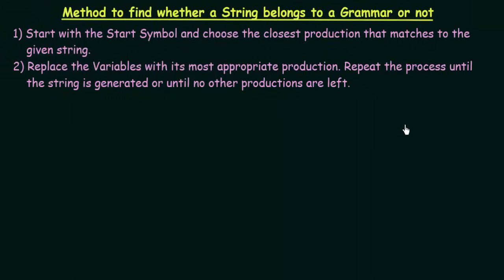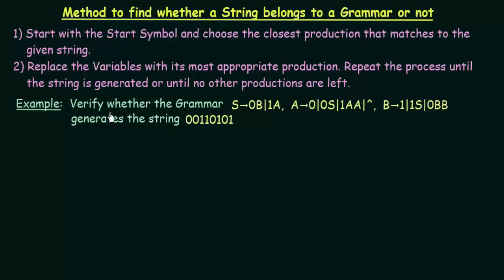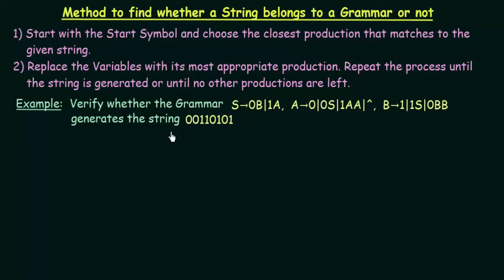Let us take an example to understand this. Verify whether the grammar generates the string 00110101. The grammar productions are: S gives 0B and 1A; A gives 0, 0S, 1AA, and the null symbol (epsilon); B gives 1S and 0BB. We have to check whether this string belongs to this grammar — that is, whether the grammar can generate the string 00110101.